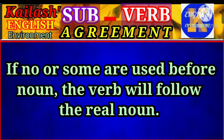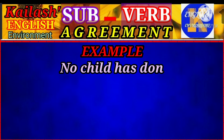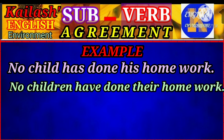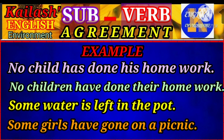If 'no' or 'some' is used followed by a noun, the verb will follow the real noun. For example, 'No child has done his homework.' But, 'No children have done their homework.' 'Some water is left in the pot.' 'Some girls have gone on a picnic.'